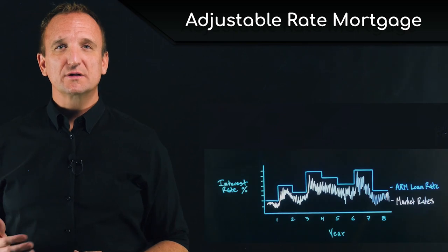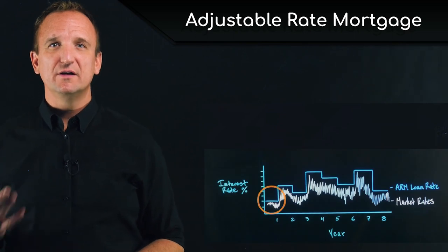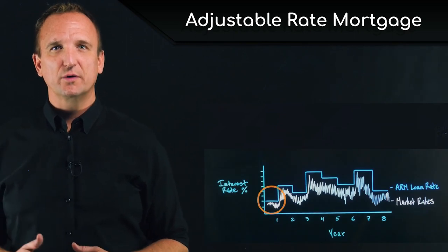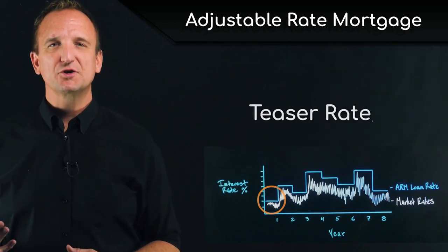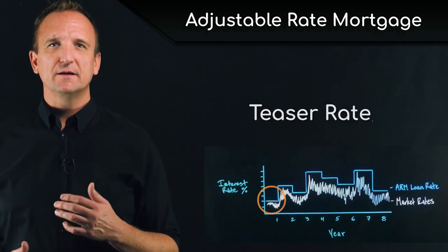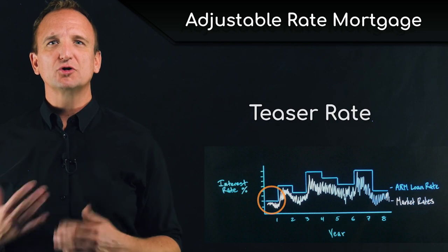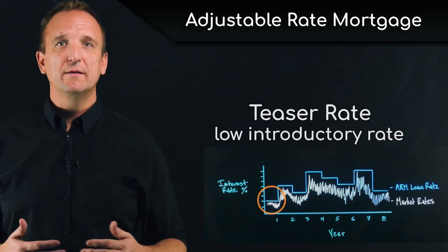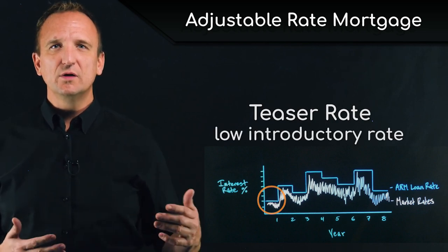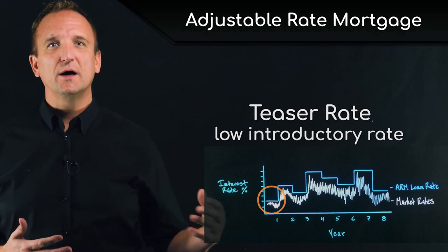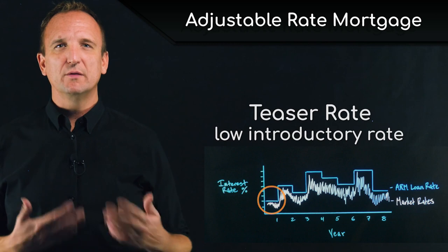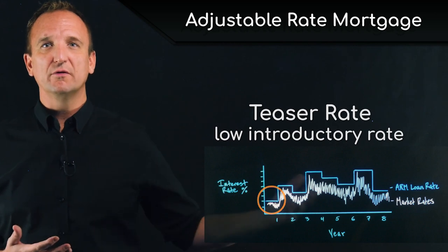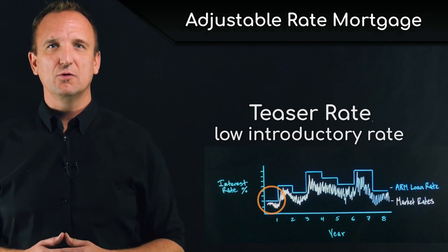Adjustable rate loans typically have an initial interest rate called a teaser rate. That is a more attractive, often extra low rate that is unrelated to the composite rate that will be in place throughout the life of the loan.